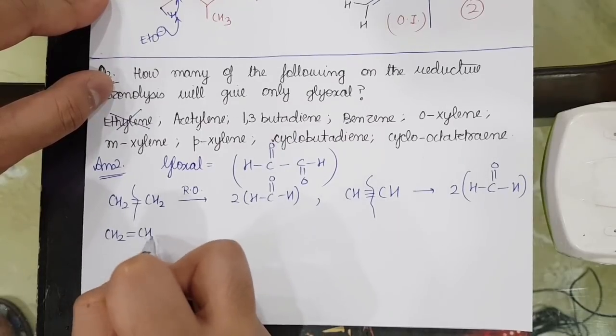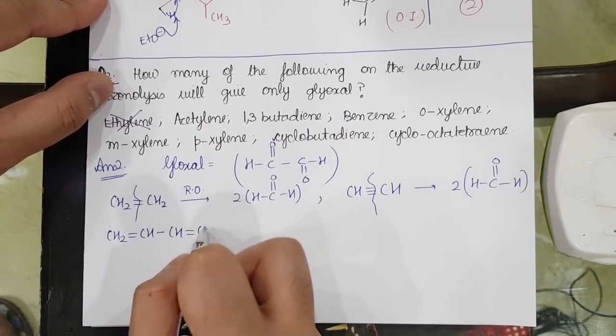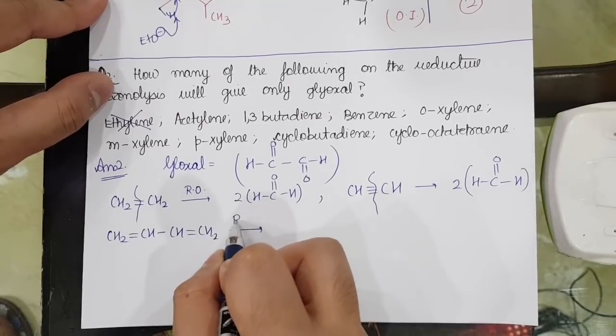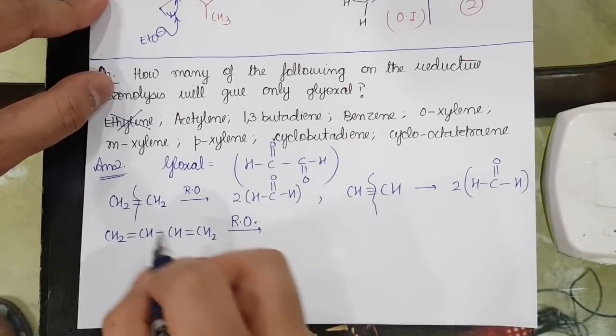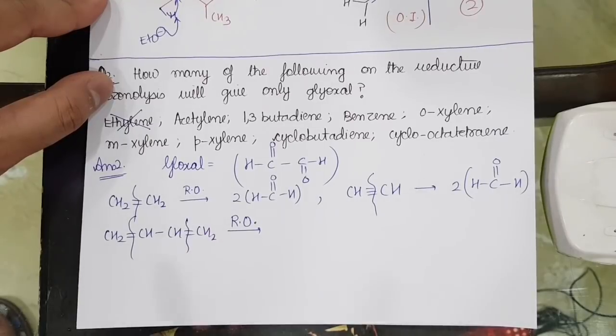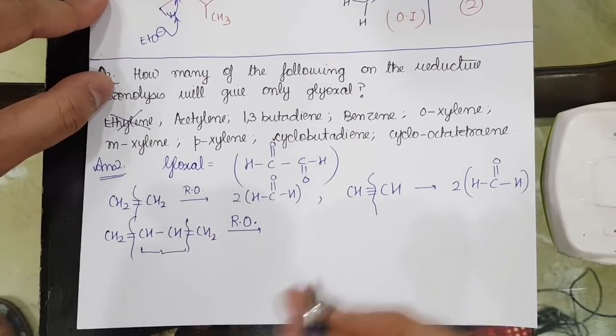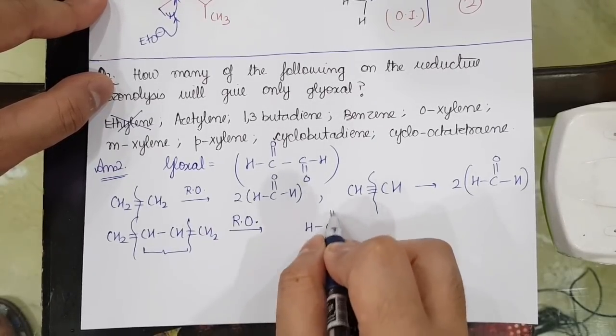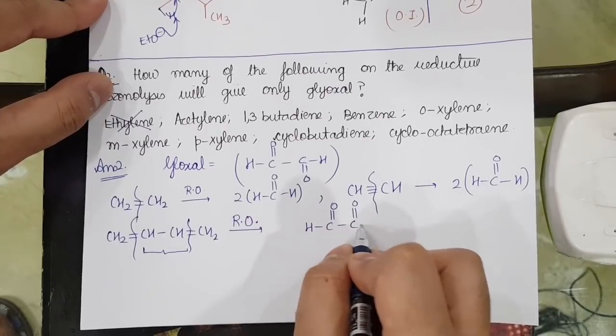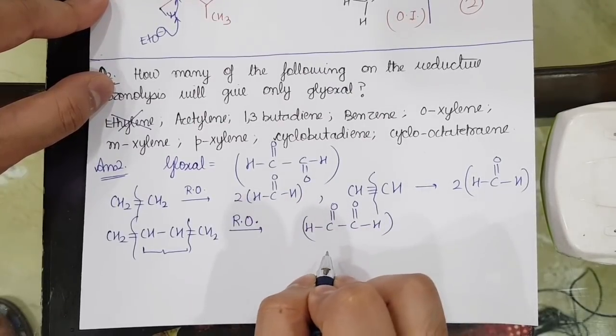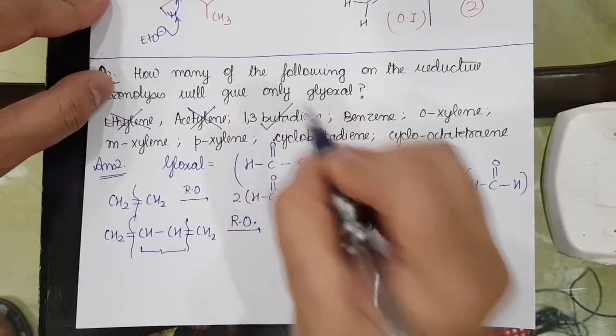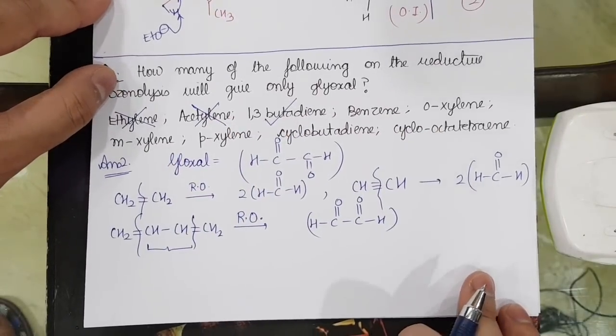In 1,3-butadiene, what happens? CH2 double bond CH-CH double bond CH2. If I do reductive ozonolysis, what is going to happen? I will get the formation of HC double bond OH, C double bond OH. So glyoxal is forming. So in the case of 1,3-butadiene, glyoxal can form.